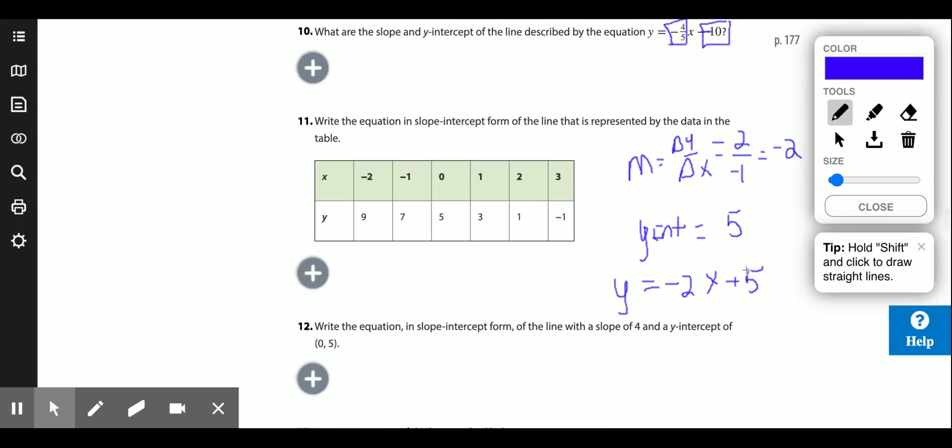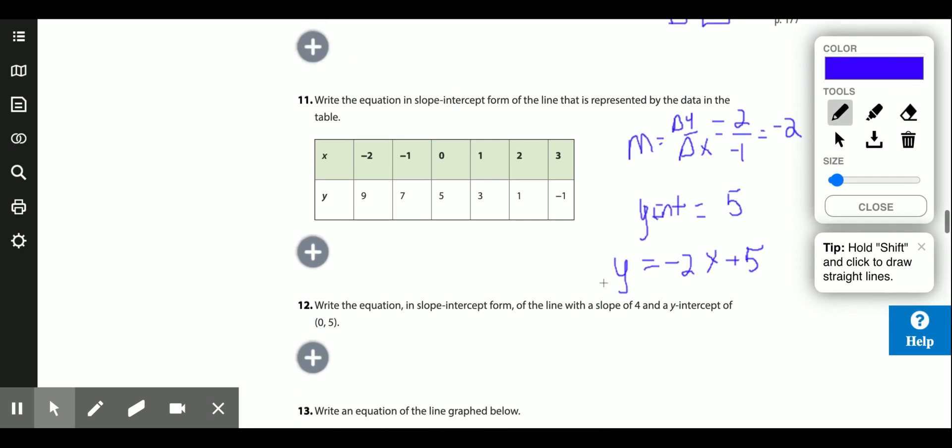And if you need to find your y-intercept, you just need to replace your x with 0. Because that's the definition of y-intercept, when x is 0. If you put a 0 here, negative 2 times 0 is 0, y equals 5. That was the y-intercept. If you need to find your slope, you need 2 points. Find rise over run, change in y over change in x.